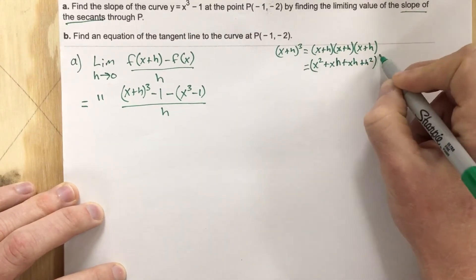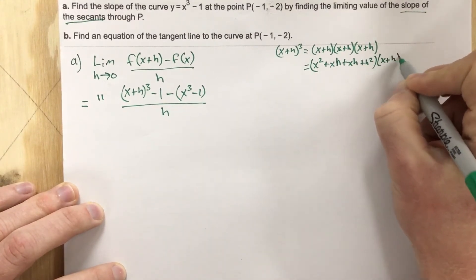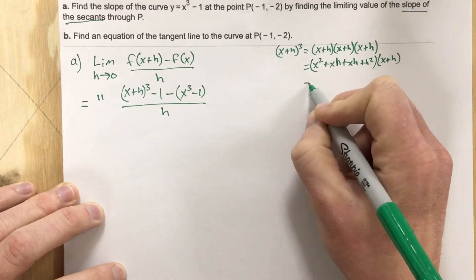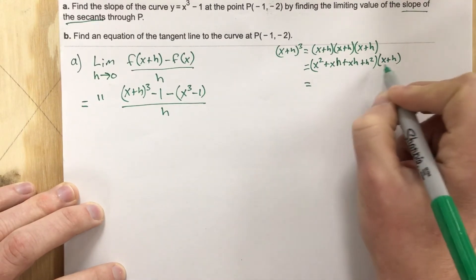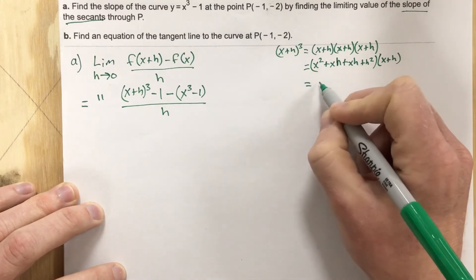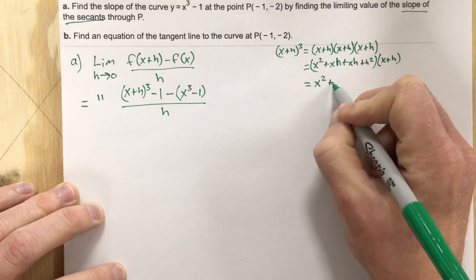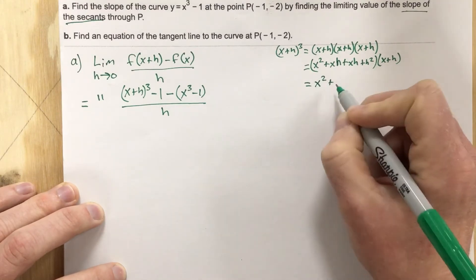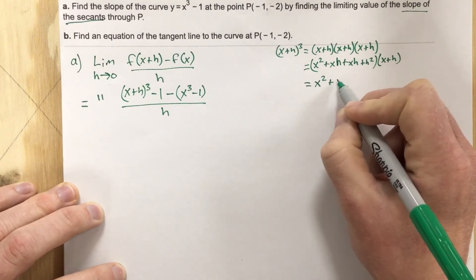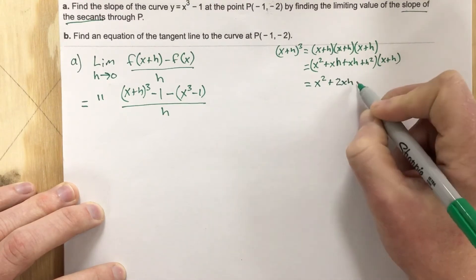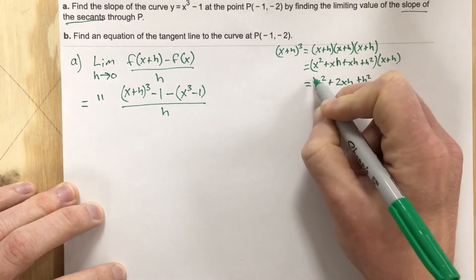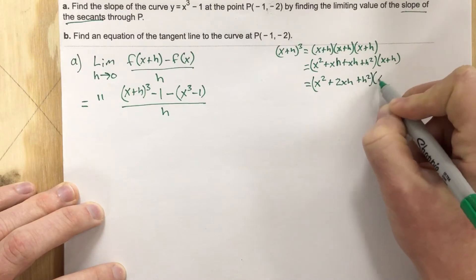So when we multiply the first two, we get this here. When we combine like terms, we get x squared plus 2xh plus h squared, and then we need to multiply it times the third x plus h.